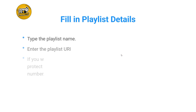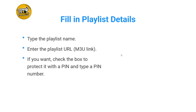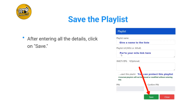A pop-up will show up. Here, you need to type the playlist name and the playlist URL. The URL is an M3U link. If you want, you can also protect your playlist by adding a PIN — just check the box and enter a PIN number. After you fill in everything, click on Save.